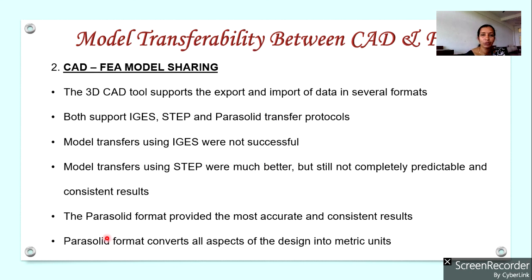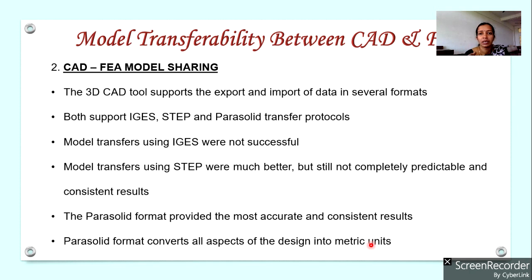However, there is a problem with Parasolid format — it converts all units into metric units (kilograms, meters, etc.). In some cases, English units may be used, such as pounds for weight and feet for length. Even if input parameters are given in English units, the Parasolid format converts them all into metric units. So the two factors affecting model transferability between CAD and FEA are: first, model complexity, and second, CAD-FEA model sharing format.